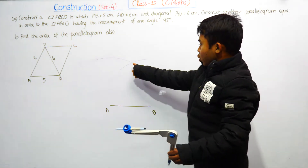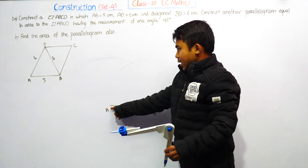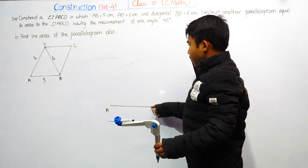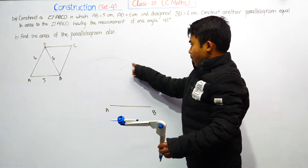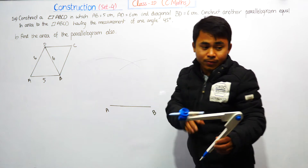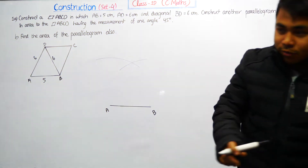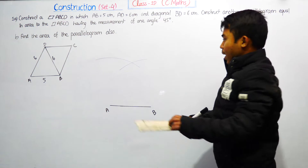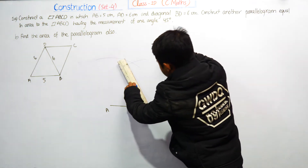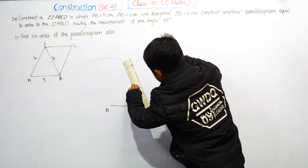At the intersection point: the arc from point A with radius 6 cm and the arc from point B with radius 6 cm intersect. That intersection point is point D. Join the points to complete the construction.